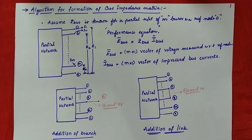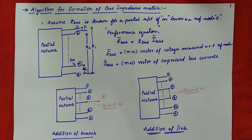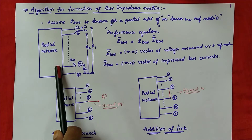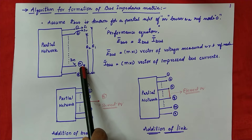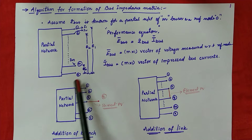Hello everybody. Today our topic is the algorithm for formation of the bus impedance matrix. In order to discuss this topic, we have to keep in mind that Z bus is known for us. Z bus is known for a partial network having M buses and 0 as our reference node. Here you can see the partial network having M number of buses and 0 as your reference node.